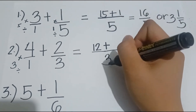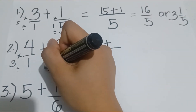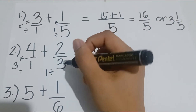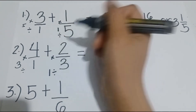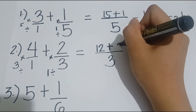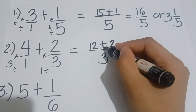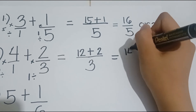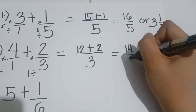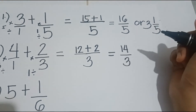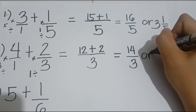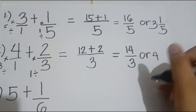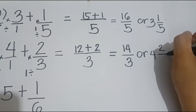Copy the operation — addition. Then 3 divided by 3 is equal to 1, and 1 times 2 is equal to 2. We add 12 plus 2, that is equal to 14. Then we copy the denominator, which is 3. Simplifying our answer gives us 4 and 2 thirds.